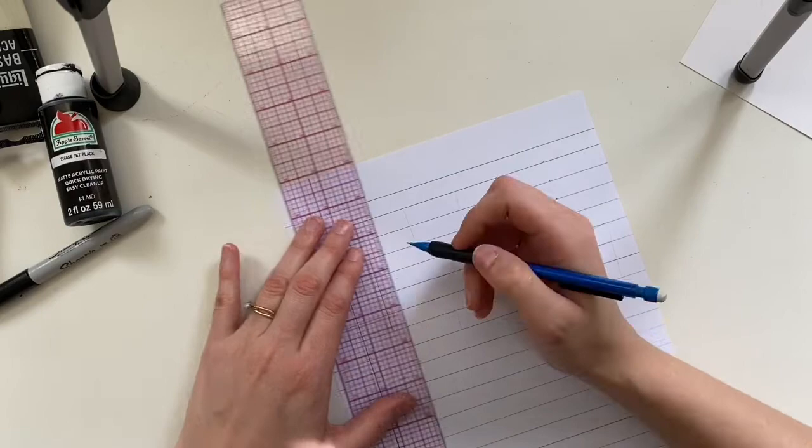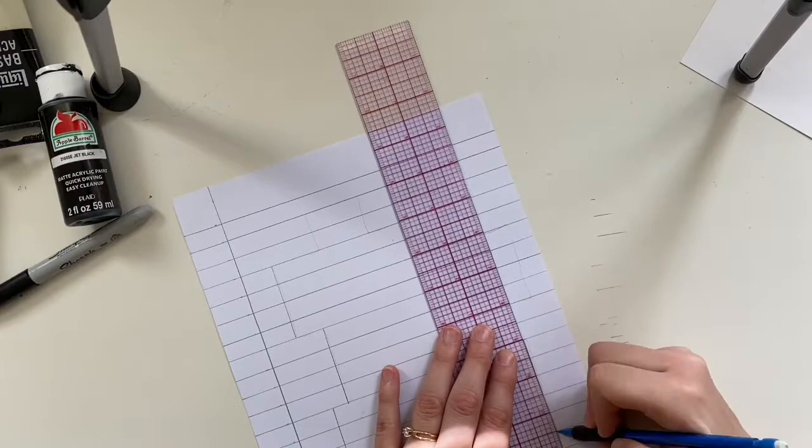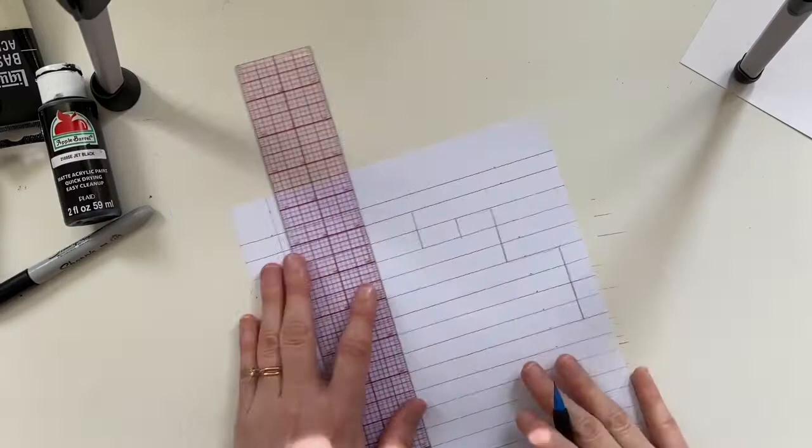Now we need to create a random shape. It doesn't have to be anything specific and you don't have to have the exact shape that I did, but we just need to create a shape that is large.